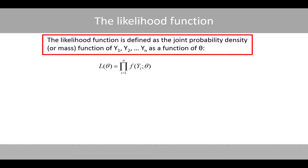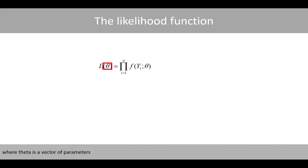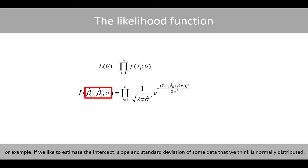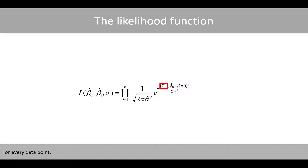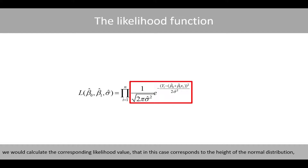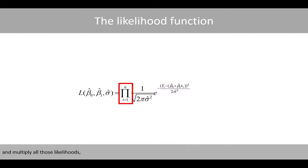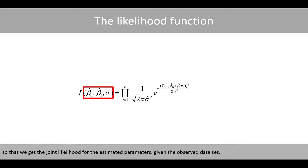The likelihood function is defined as the joint probability density function of our observations as a function of theta, where theta is a vector of parameters and this is some probability density function. For example, if we like to estimate the intercept, slope, and the standard deviation of some data that we think is normally distributed, we would simply use the probability density function of the normal distribution. For every data point, we would calculate the corresponding likelihood value — which corresponds to the height of the curve of the normal distribution — and multiply all those likelihoods, so that we get the joint likelihood of the estimated parameters given the observed dataset.